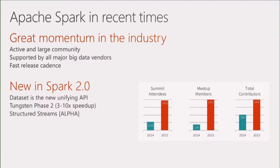Spark is now supported by all major vendors that offer Hadoop distributions. Big companies like IBM and Microsoft are making big bets on Spark. It has great momentum, a large community of committers, and releases on a good cadence — about every three months over the past year. Now we're talking about Spark 2.0, which brings unified APIs, speed improvements via Tungsten 2.0, and structured streaming.